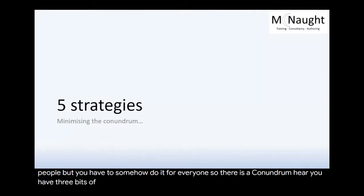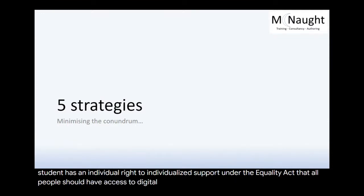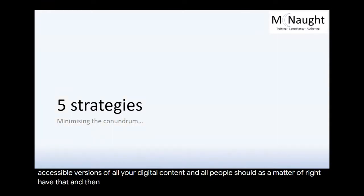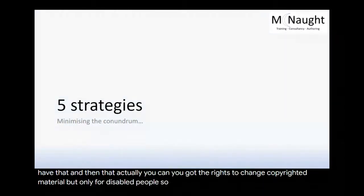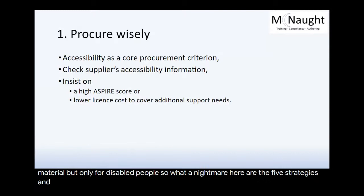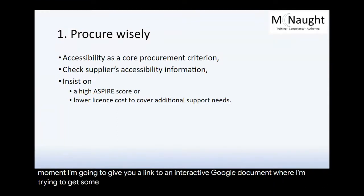You have three bits of legislation to negotiate: that an individual student has an individual right to individualised support under the Equality Act; that all people should have access to accessible versions of all your digital content as a matter of right; and then that actually you've got the rights to change copyrighted material, but only for disabled people. So what a nightmare. So here are the five strategies.